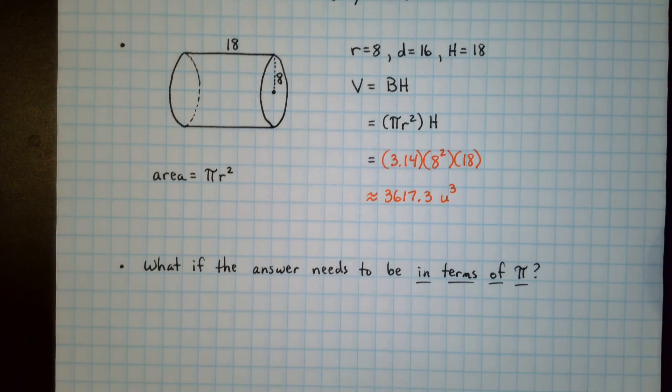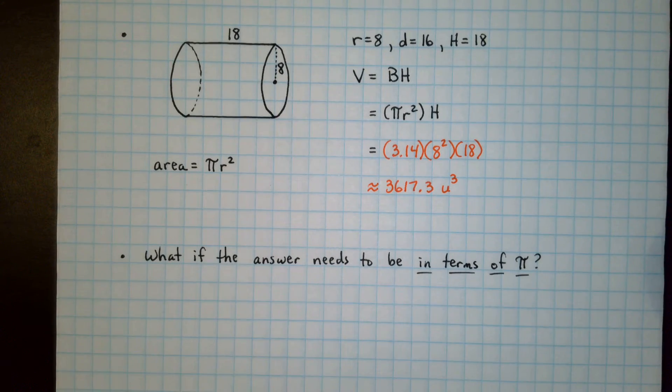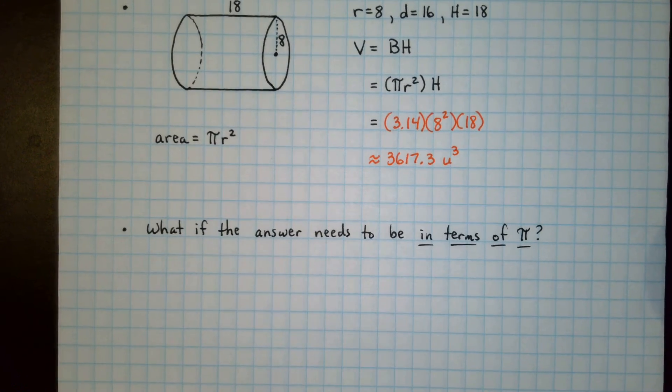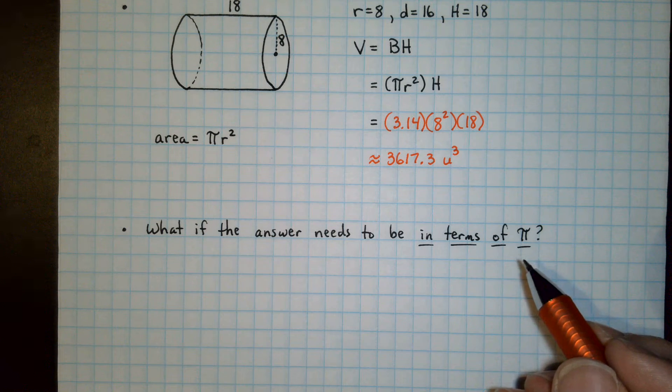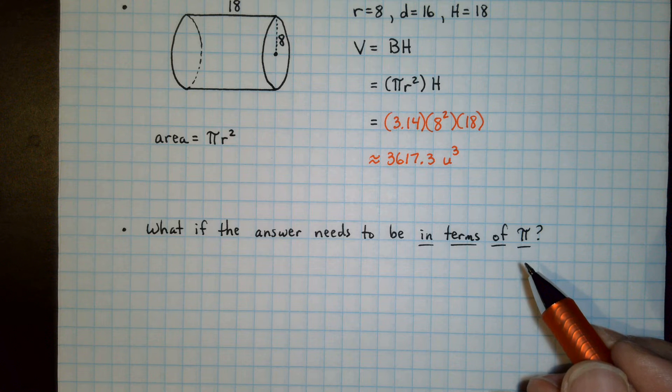Now the question may arise, what if the answer needs to be in terms of pi? How do we handle that? Well, in terms of pi just means that you're not going to put 3.14 or any other decimal approximation for pi. You're going to leave this symbol.